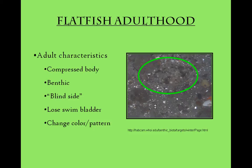Upon adulthood, flatfish will become benthic, as opposed to being planktonic prior to the metamorphosis process. They will live their lives on the ocean floor in order to protect their blind side that has resulted from the migration of the associated eye. They will also lose the swim bladder they possess in the larval stage. Adult flatfish have a highly compressed body shape, which allows them to blend in with their benthic surroundings. They can also manipulate their skin color and patterns to camouflage themselves from potential predators.